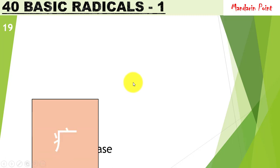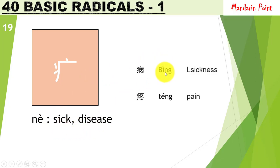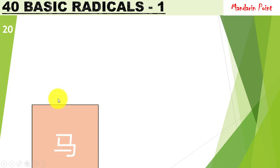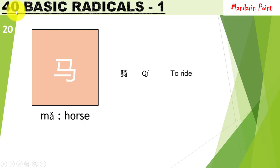The radical 疒 nè refers to sickness or disease, always indicating being ill. For example, 病 bìng meaning 'sickness' and 痛 tòng meaning 'pain' — both are covered by this radical. The last radical for today's lecture is 马 mǎ meaning 'horse.' For example, 骑 qí meaning 'to ride' — in old times, riding was related to horses, so horse-riding is what this radical represents.